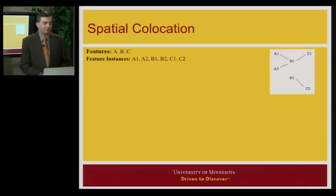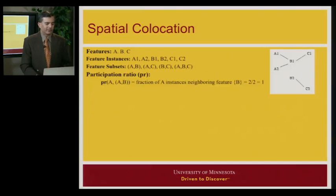So here again, we start with a set of features A, B and C in this case and their instances. And the candidate collocations are subsets of features. It could be A, B, A, C, B, C, A, B, C and so on. In this case, we always start from pair. It's not defined on singleton.